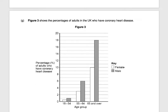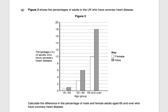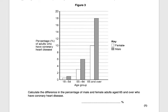Figure three shows the percentage of adults in the UK who have coronary heart disease. Calculate the difference in the percentage of male and female adults aged 65 and over. The white bar is female at 10% and the shaded bar is male at 18%. The difference is 8%, for one mark.